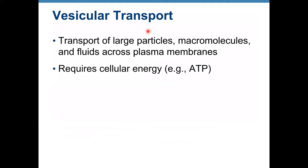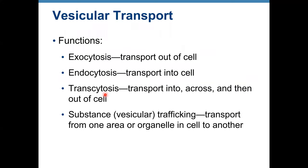Vesicular transport is also an active process. It transports large particles, macromolecules, and fluids across the plasma membrane and requires ATP. The major types of vesicular transport are: exocytosis — out of the cell; endocytosis — into the cell; transcytosis — into, across, and out of the cell; and substance trafficking — transport from one organelle to another within the cell.